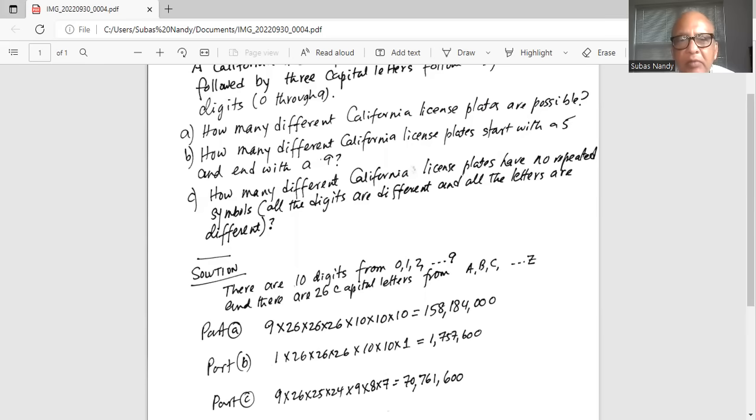Part B, how many different California license plates start with a five and end with a nine. If it starts with a five you have fixed only one and then three letters from the alphabet so 26 times 26 times 26.